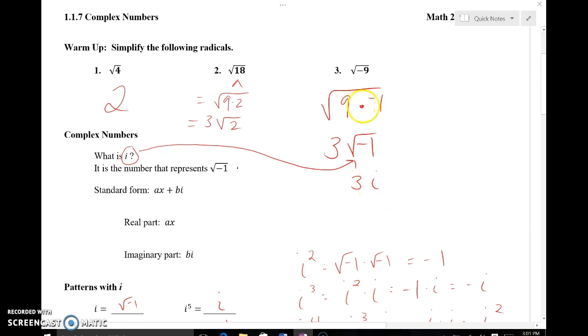So I broke this down into 9 times the negative 1, the one that made it negative and I took the square root of the number that I did know and that was 3 and I left the negative 1 underneath there and again we said that we're going to define i as the square root of negative 1 so whenever you see that i.